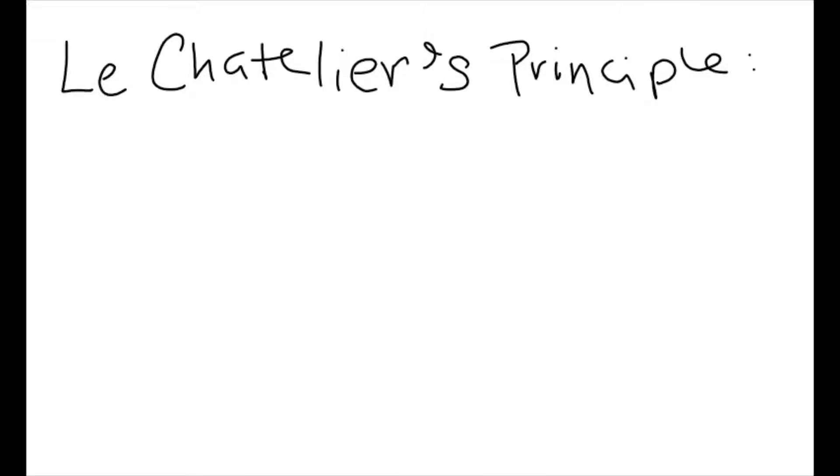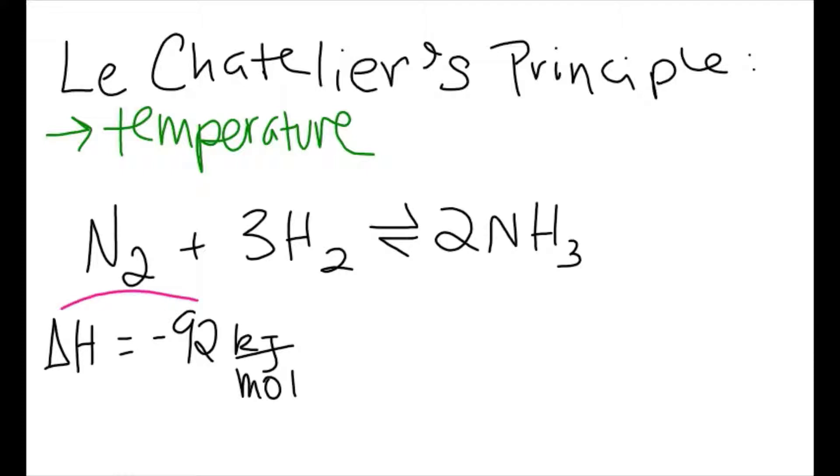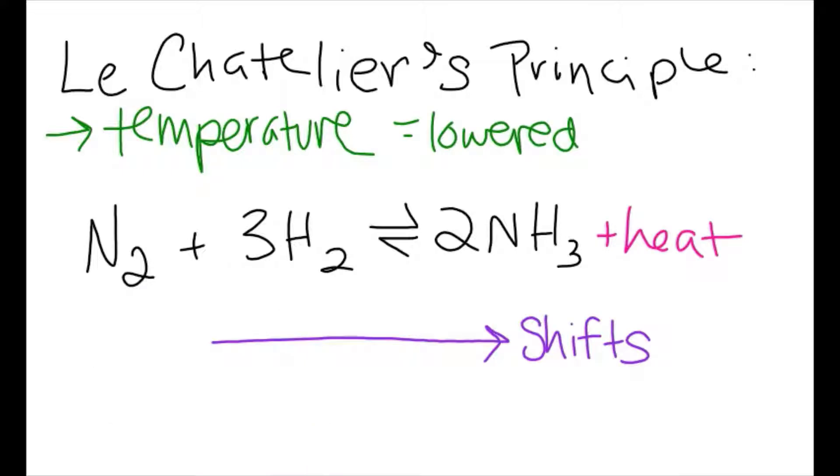That's where Le Chatelier's principle helps us. Let's look at our first condition: temperature. We know this equation is exothermic, meaning heat is produced. When we lower the temperature, the system produces more ammonia to generate more heat and reach equilibrium.